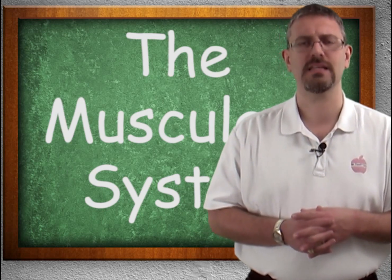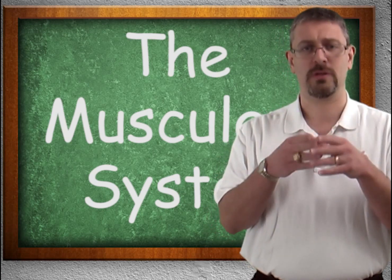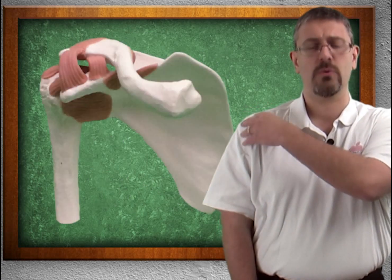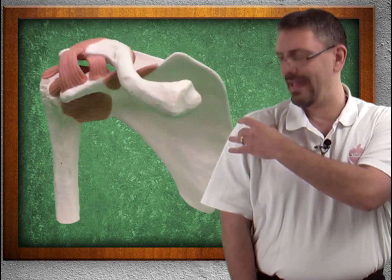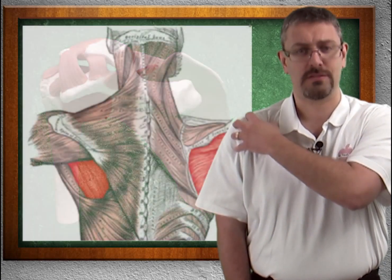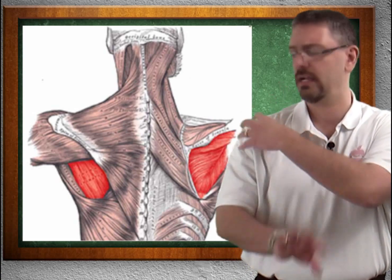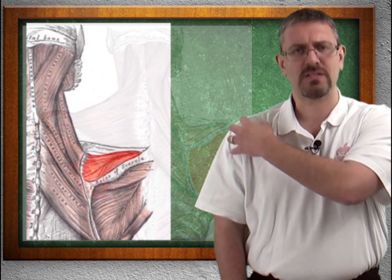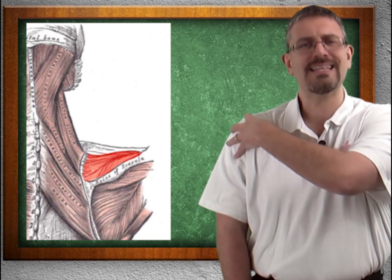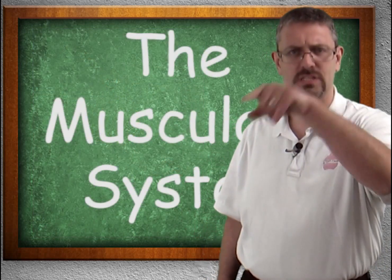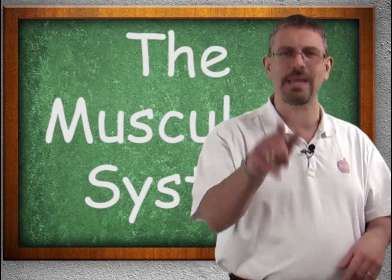The next function is stabilizing the joint. For example, the glenohumeral joint — the shoulder joint. We have a group of muscles called the rotator cuff muscles: supraspinatus, infraspinatus, teres minor, and subscapularis. We'll cover them later. But this grouping of muscles, the rotator cuff muscles, holds the shoulder steady — it stabilizes the shoulder. If you're a baseball fan, when they pitch the ball, those are the muscles they're using.